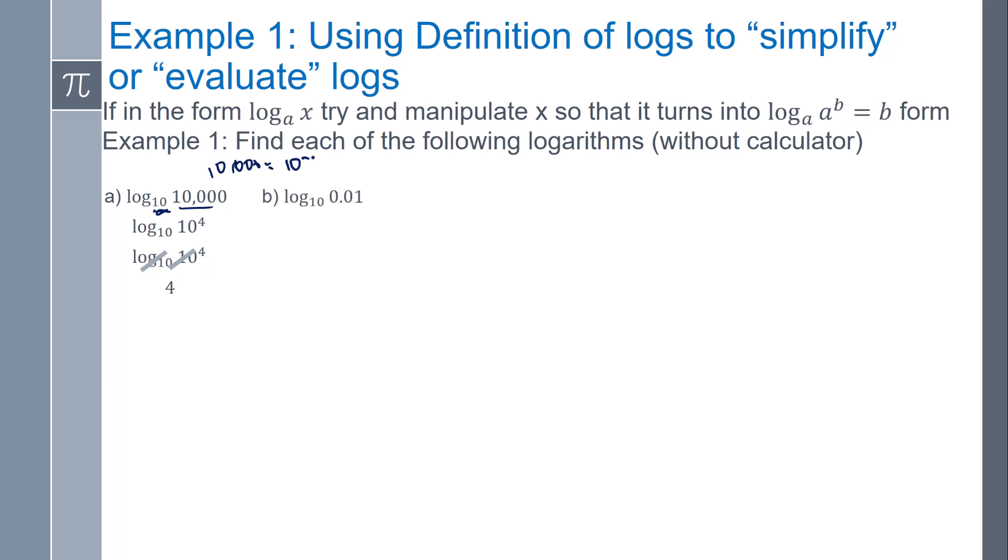If I have log base 10 of 0.01, so what power do I need to raise 10 to get me 0.01? So I'm going to rewrite that as 1 over 100, which is 1 over 10 squared, and then when we move the exponent up, it becomes a negative exponent, and so the log base 10 and the 10 cancel out, and I get negative 2.